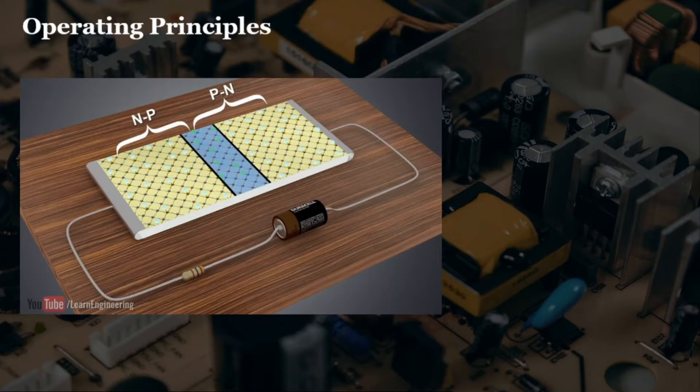Here we see a battery connected to the collector and emitter of our transistor. If we take a look at here, there will be no flow of current since one of the P-N junctions will be reversed bias even if we interchange the connection of our battery.